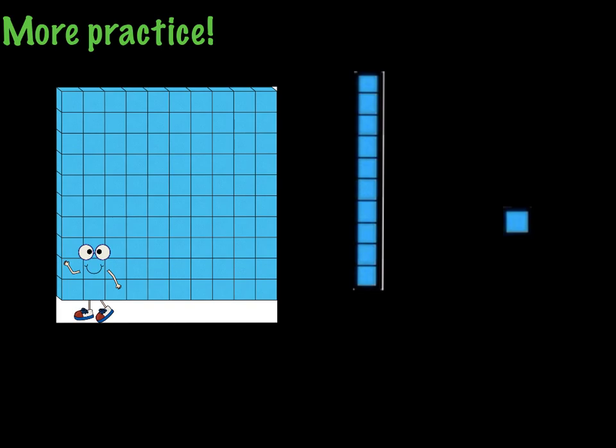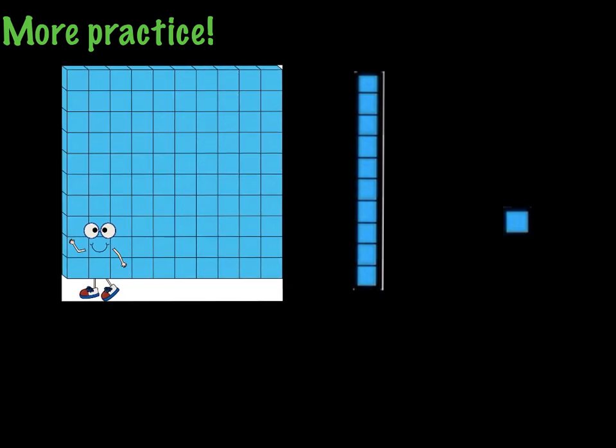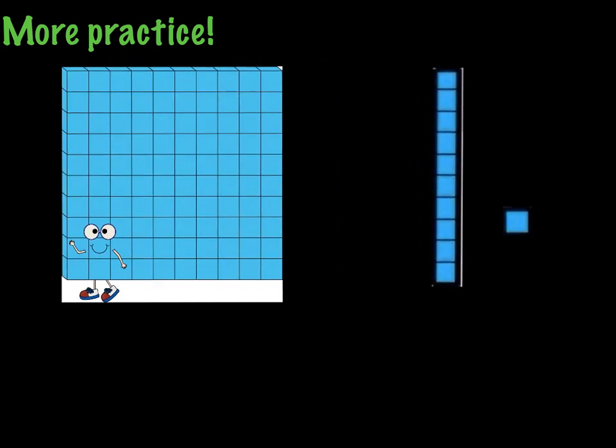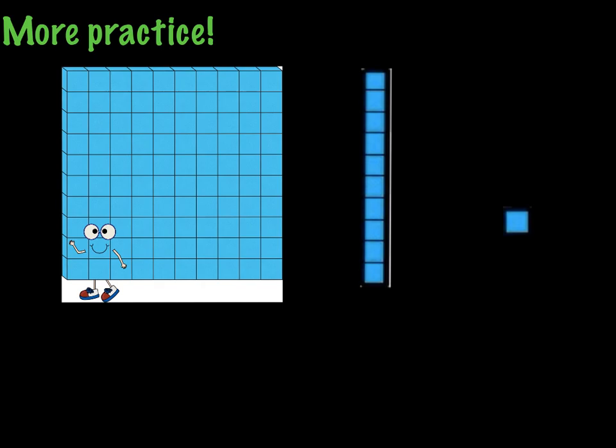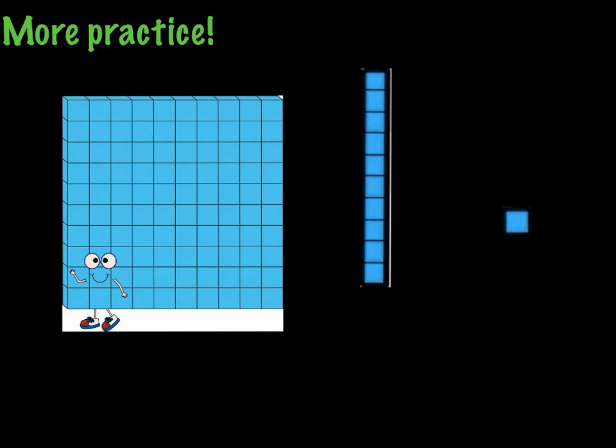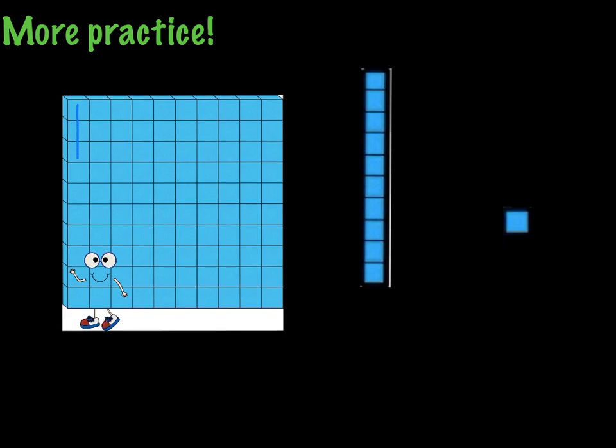So let's say that I have my hundredth grid, and I have covered it with three of my rods. Who can tell me what decimal that would be? If I had three rods, so that means that I would have this row covered, this row covered, and this row covered. What fraction would that be, and what decimal would that be? Hopefully you said thirty, not three, one-hundredths.